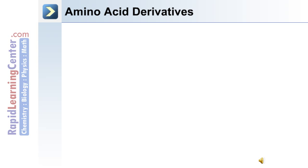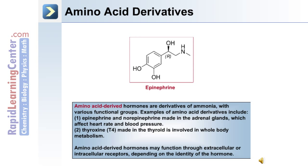The following are examples of hormones derived from amino acids. Amino acid derivatives include epinephrine, norepinephrine, and thyroxin. Epinephrine and norepinephrine are made in the adrenal glands and affect heart rate and blood pressure. Thyroxin, or T4, is made in the thyroid and is involved in whole body metabolism. Amino acid derived hormones may function through extracellular or intracellular receptors, depending on the identity of the hormone itself.